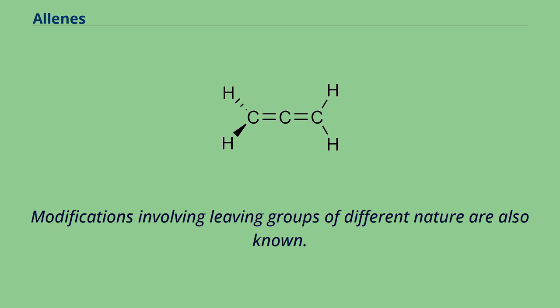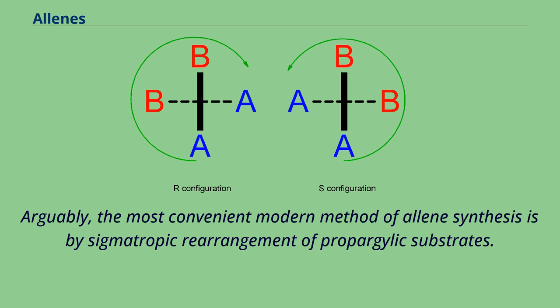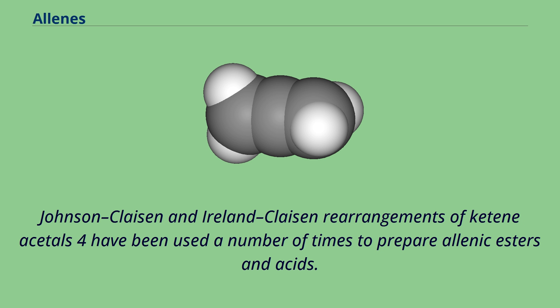Arguably, the most convenient modern method of allene synthesis is by sigmatropic rearrangement of propargylic substrates. Johnson-Claisen and Ireland-Claisen rearrangements of ketene acetals have been used a number of times to prepare allenic esters and acids.